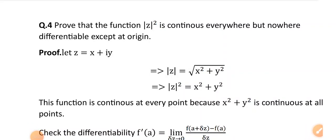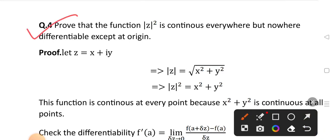Hello everyone. This is the first long question of unit number 1. This is the statement of question number 4: Prove that the function |z|² is continuous everywhere but nowhere differentiable except at the origin.